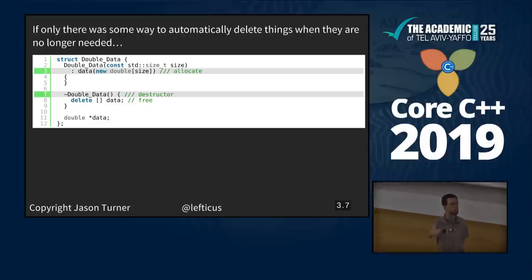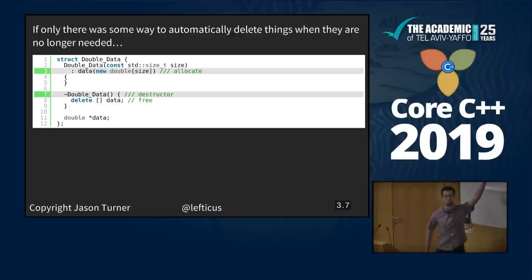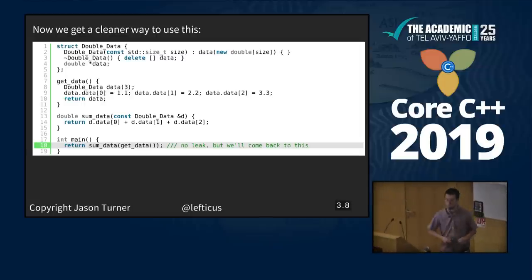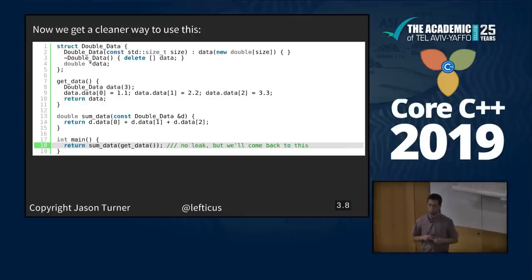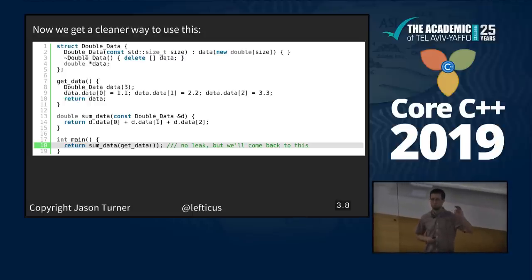Smart pointers — we'll get to those. RAII. We have destructors. We can use destructors in our C++ code. This code technically has no leak in it — practically has no leak in it — but it does have a problem. If you see the problem, you can feel proud and we'll come back to it.